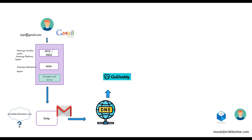The domain service provider can be GoDaddy or any other registrar such as Namecheap — there are many service providers. DNS will route the request to the SMTP service and tell it to go and ask GoDaddy. So the SMTP service reaches the domain provider and finds the MX record for this domain. The MX record is used to receive emails and tells the email server where to route email for this particular domain.